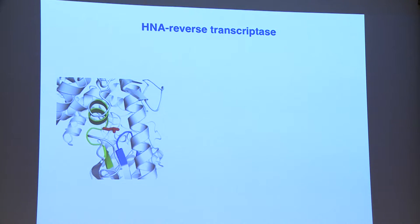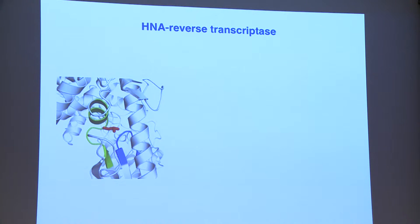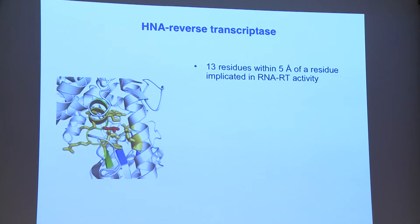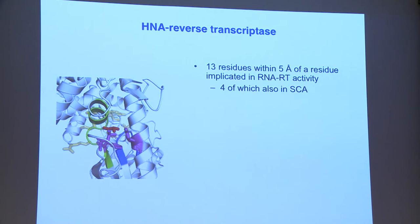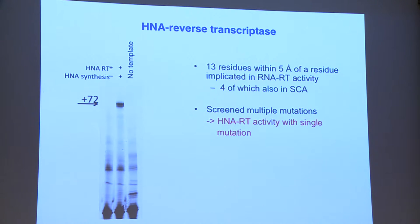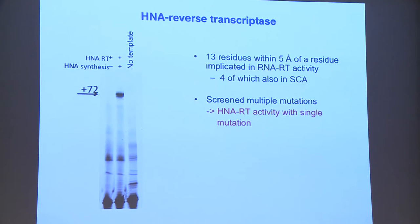We tried to route this analysis to a specific residue described by Stratagene to convert RNA reverse transcriptase activity on a related polymerase from Pyrococcus. When we mutated it, it gave us nearly no RNA nor HNA reverse transcriptase activity. But we decided to look in the vicinity — maybe a solution could be found close by. Of the 15 residues in close vicinity, 4 were part of the SCAR networks, and one of these, when mutated — isoleucine to leucine, a really subtle mutation — gave us an excellent reverse transcriptase activity.